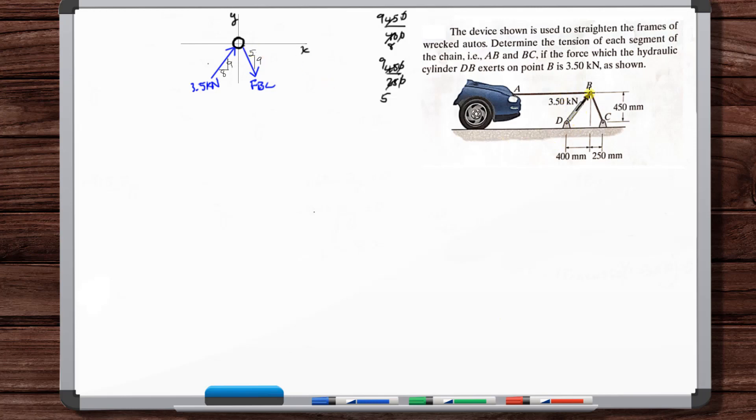And then again, we could assume the direction for chain AB, but let's try and get it right. And just remember, we know the lines of action of these forces, right? Like because this is a cable or a chain. The force has to go, they can't take compressive forces. And we know that the line of action goes along the chain. It has to.